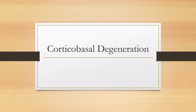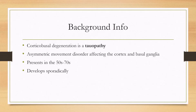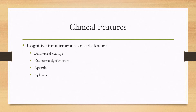Let's talk about corticobasal degeneration. This is a tauopathy, as opposed to an alpha-synucleinopathy. It's an asymmetric movement disorder affecting the cortex and the basal ganglia — hence how it got its name. It presents in someone's 50s to 70s and typically is considered a sporadic disorder; it's not really an inherited disorder.